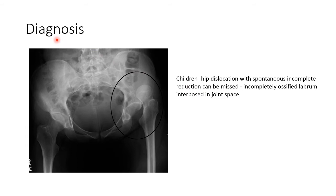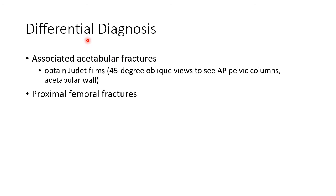Hip dislocation can be diagnosed using X-ray. In children, hip dislocation with spontaneous incomplete reduction can be missed by X-ray. This is because of the incompletely ossified labrum interposed in the joint space.